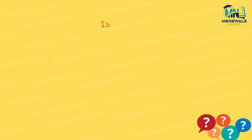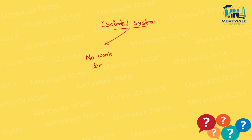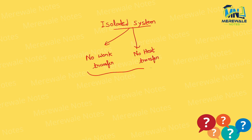We need to know what an isolated system is. An isolated system means: there is no work transfer, there is no heat transfer. Some books club both together and write: there is no energy transfer.